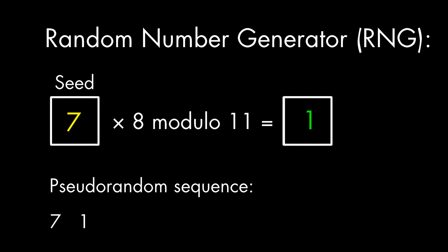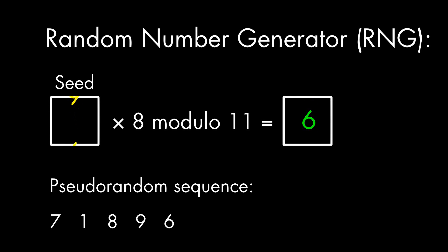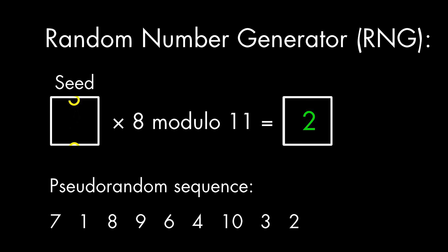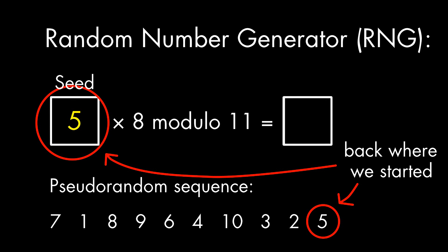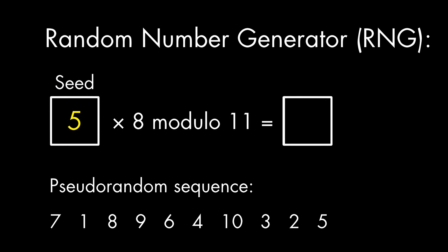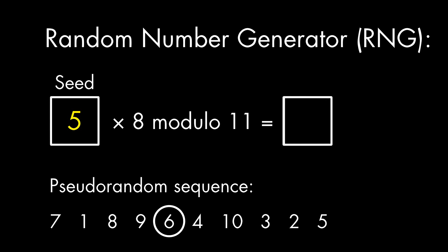We keep doing this every time we need a new random number. The special numbers we used in the math — the 8 and the 11 — have been chosen so they have certain mathematical characteristics and relationships with each other. We can choose different numbers if we want a different range of pseudo-random output. These are not truly random numbers, but the series jumps around enough that it looks like it's random, which is often all we need.